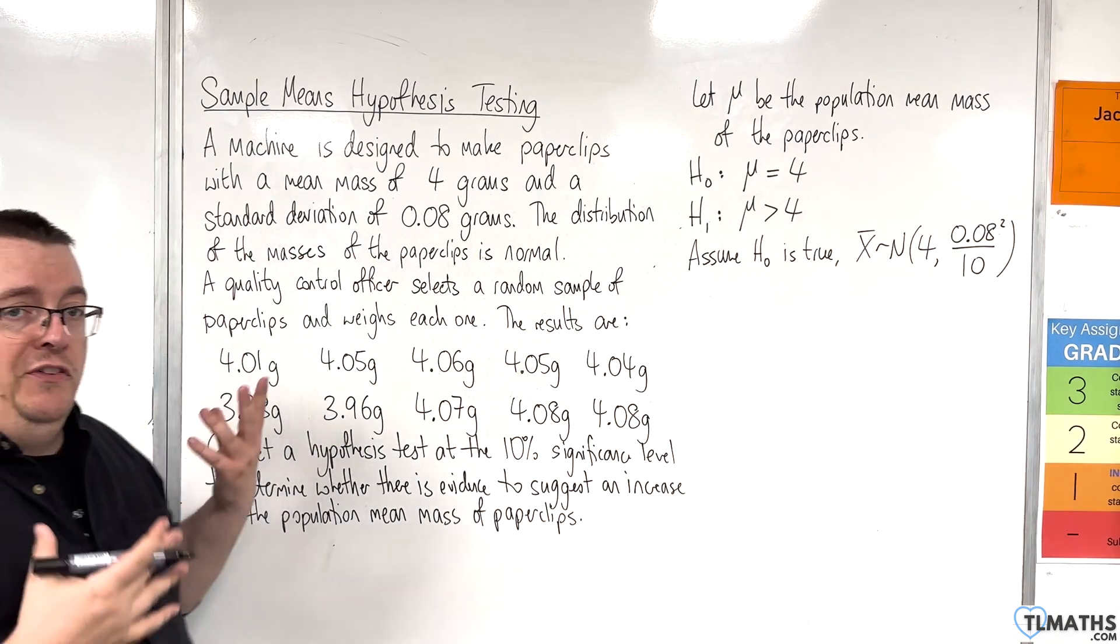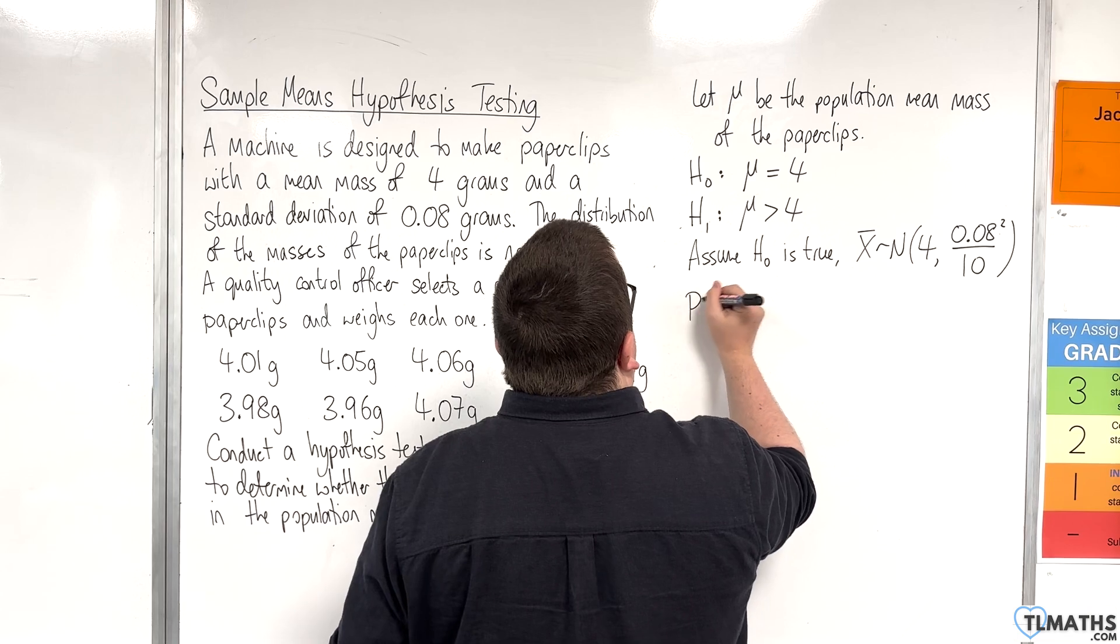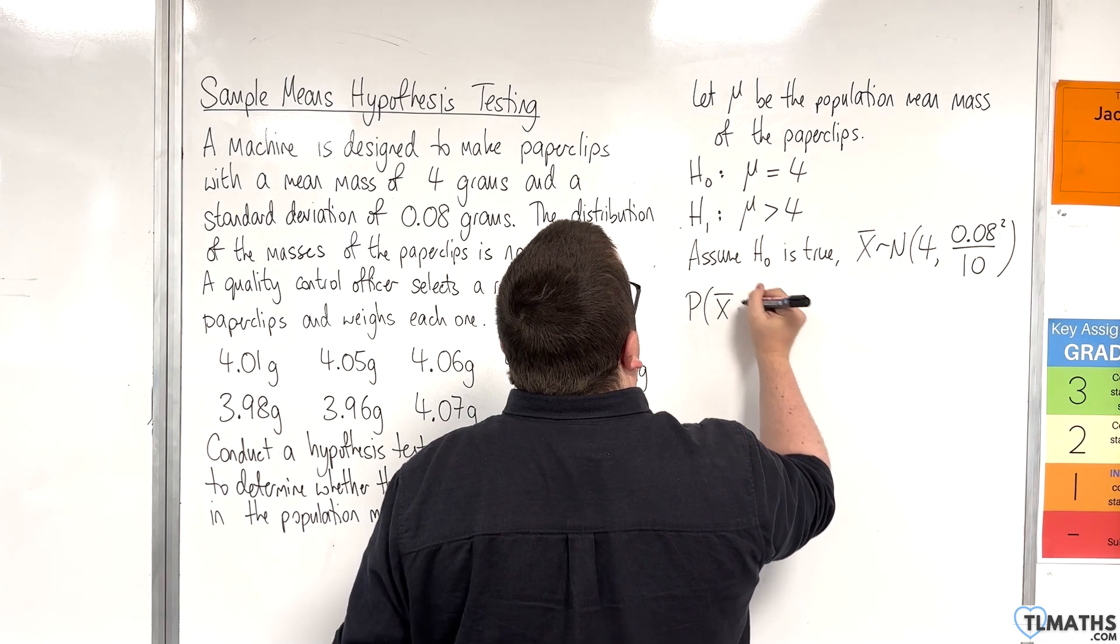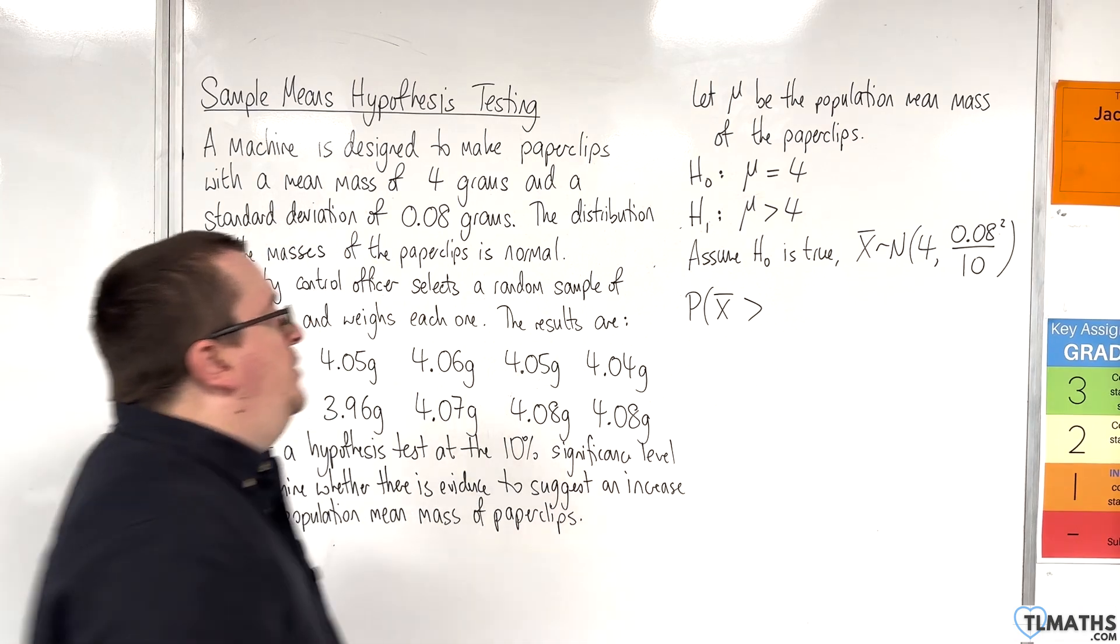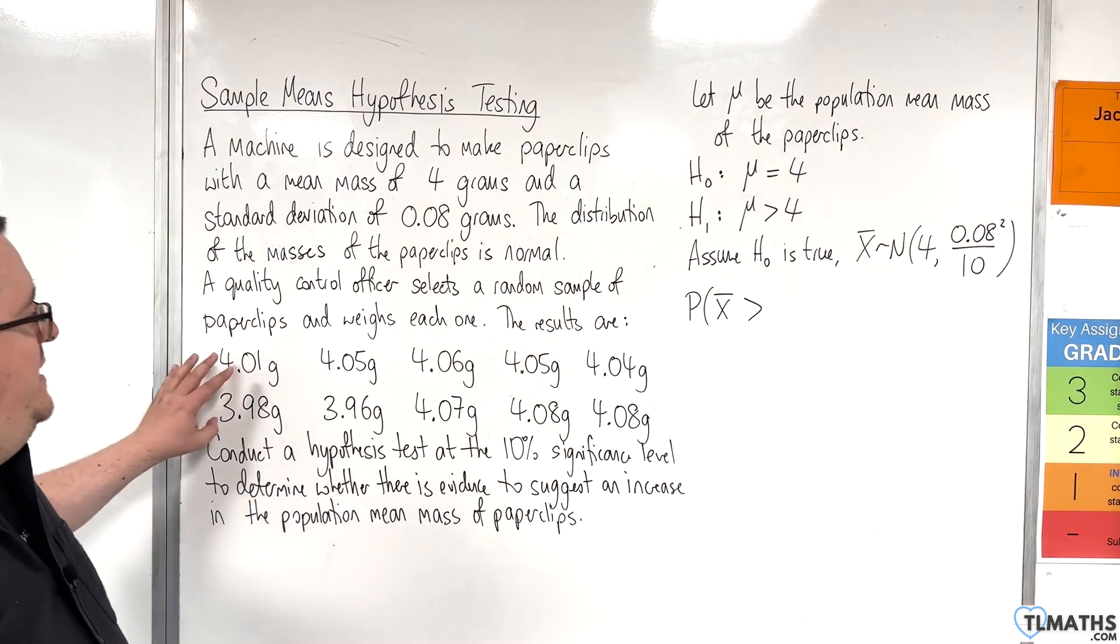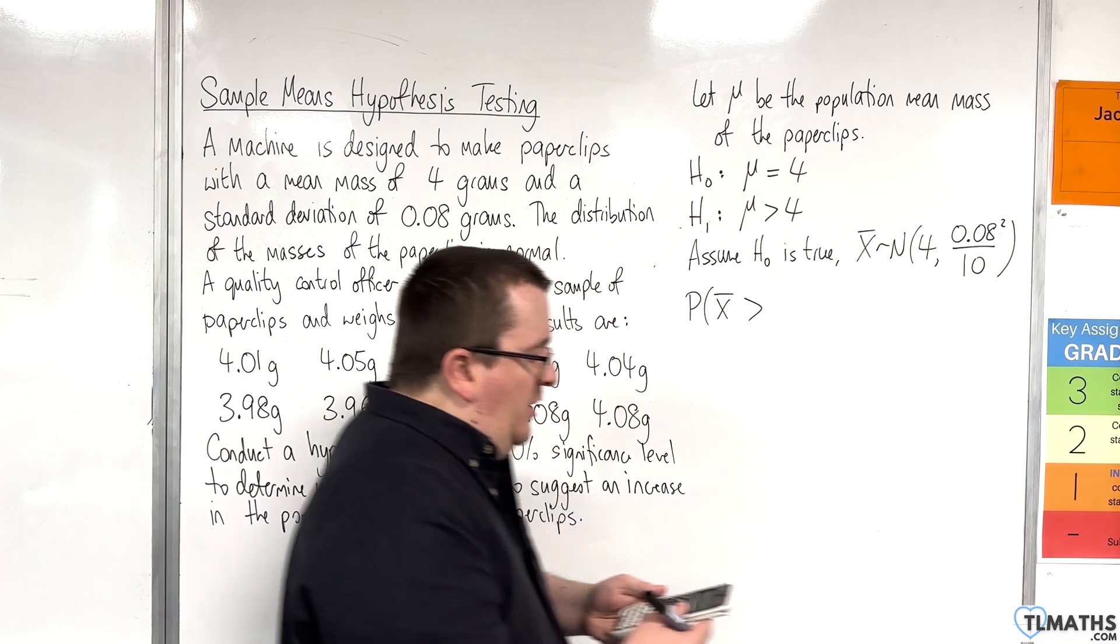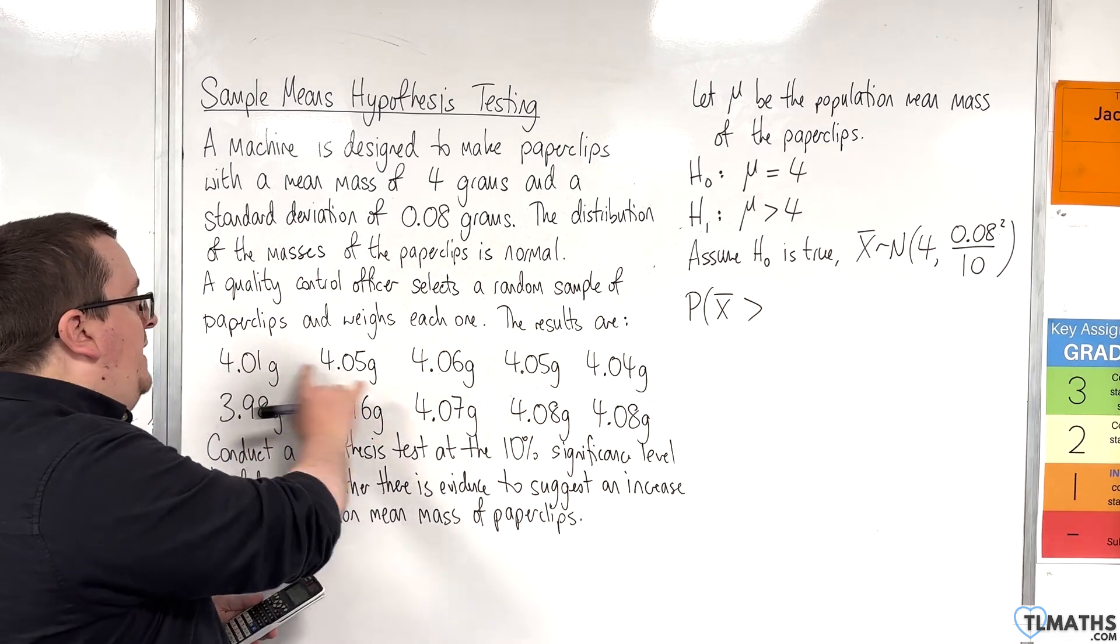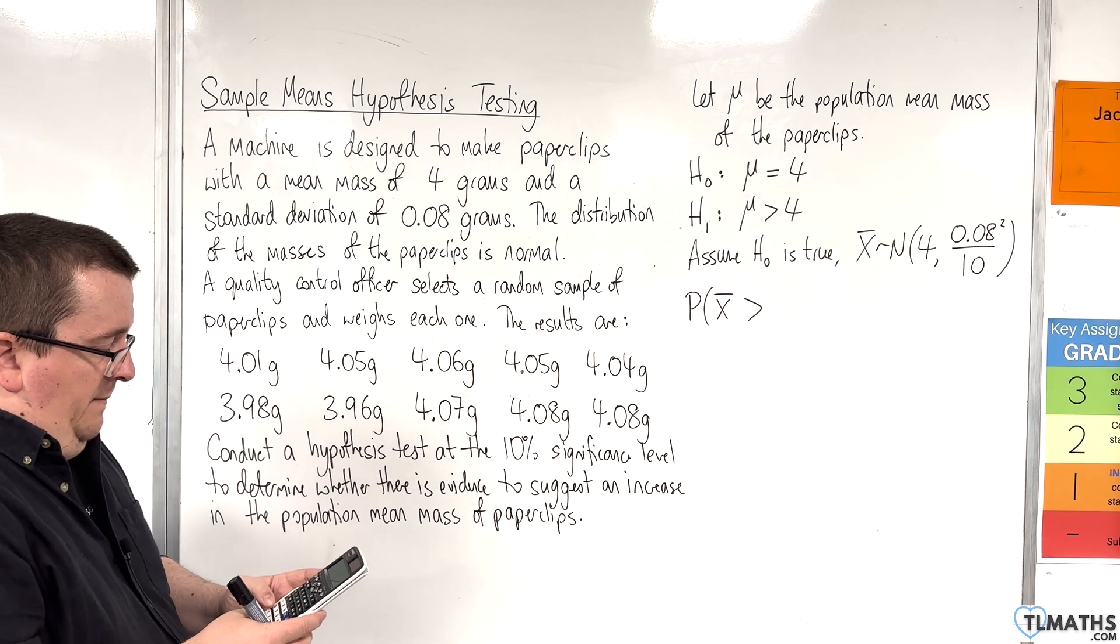In this video I'm going to be using the p-value method. I'm going to be looking at the probability of x-bar being greater than - this inequality matches that one. I need to know what the sample mean is, so I need to work out the mean of those 10 numbers.